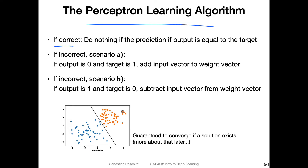If the prediction is correct, nothing happens — we don't need to update the decision boundary. However, if it's incorrect, there are two scenarios: scenario A and scenario B. Scenario A is if the prediction is class zero while the target is class one. Scenario B is if the prediction is one and the actual label is zero. In both cases we make a mistake and have to update the perceptron.